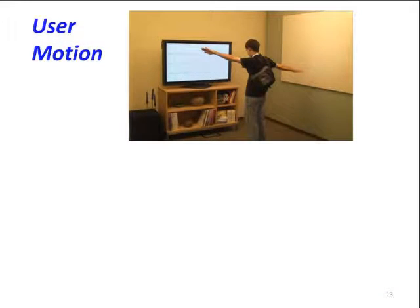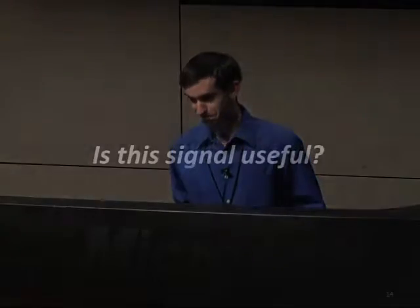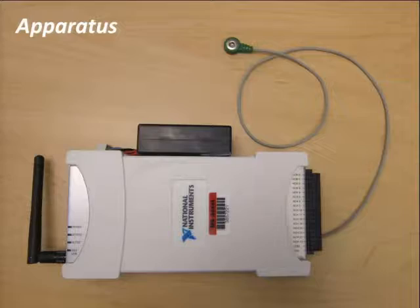When I move, the signal changes. For example, when touching walls, the amplitude clearly changes because touching the wall means I'm closer to the power lines and strongly coupled to them. When I stand in the center of a room and swing my arms, we see amplitude changes and what I call a DC shift where the wave jumps up and back down. The question is: is this useful? Can we actually make a gesture system based on this? If I perform the same action every time, do we get the same signal?